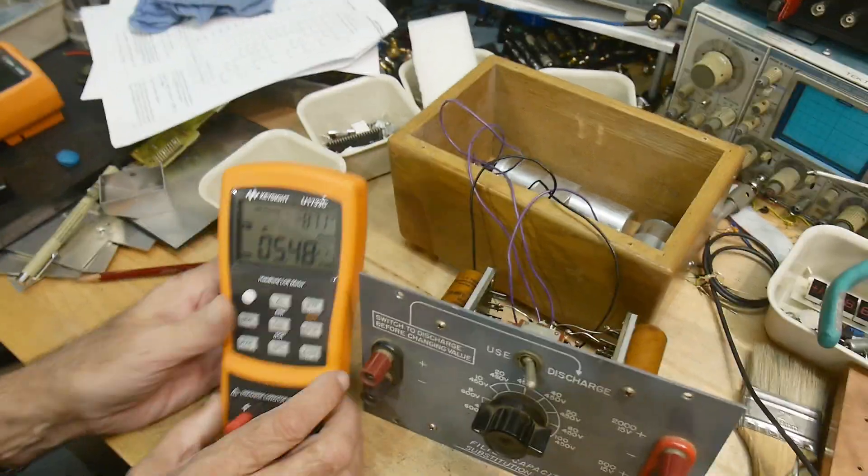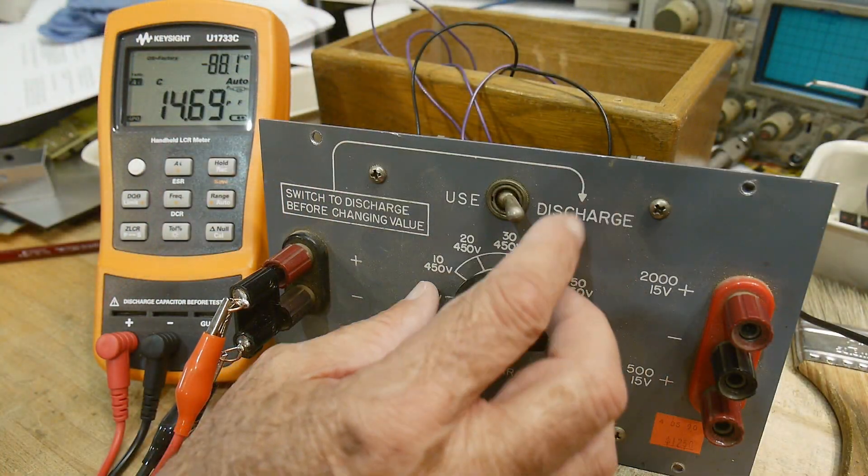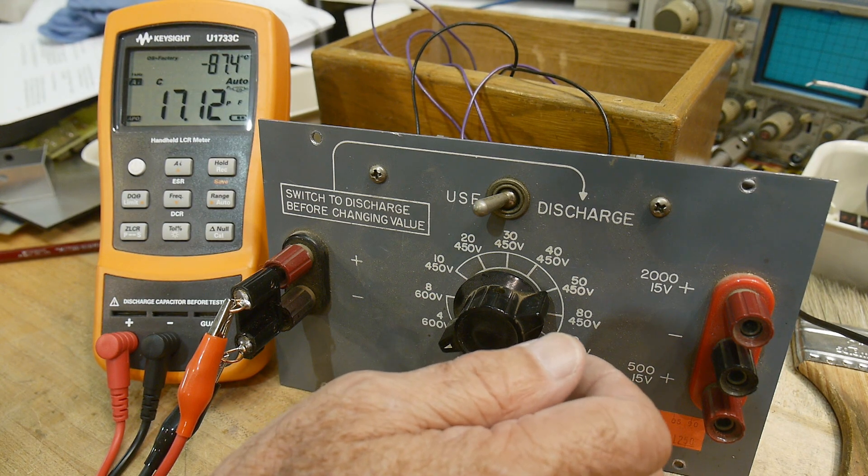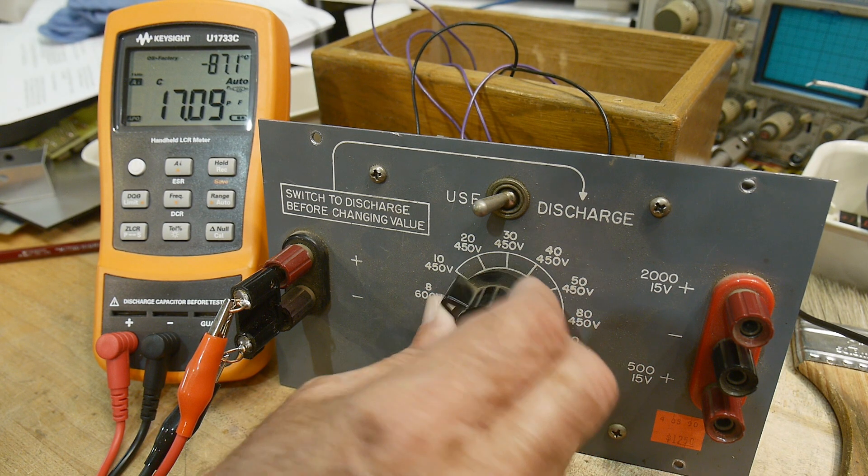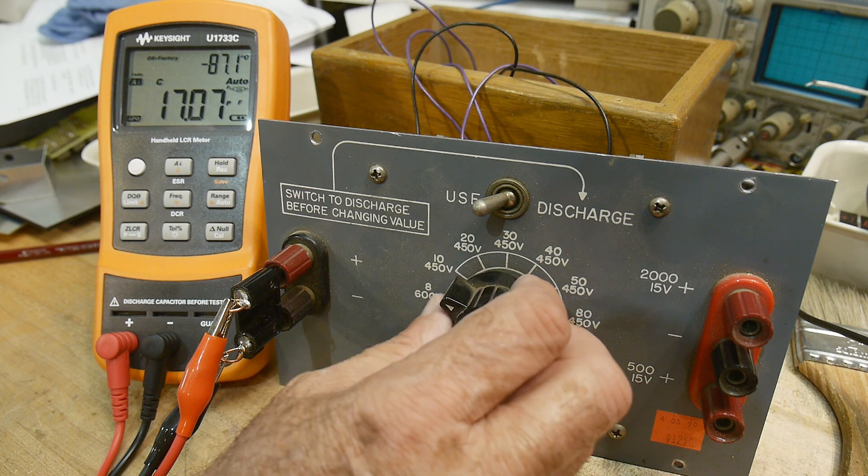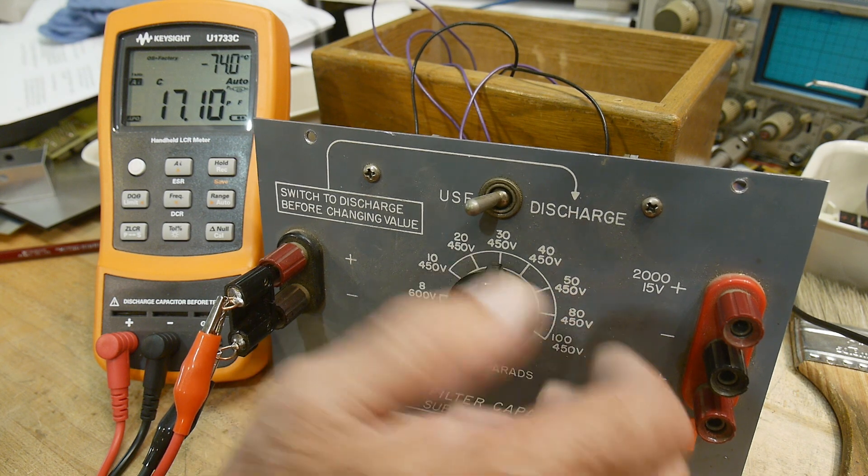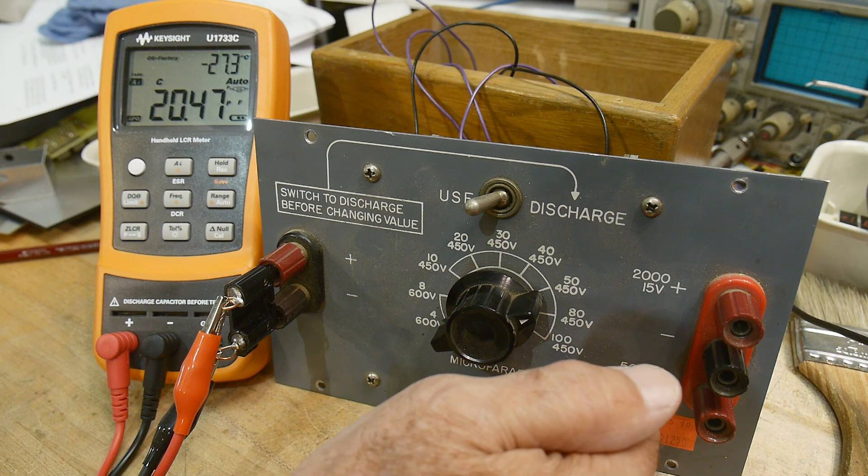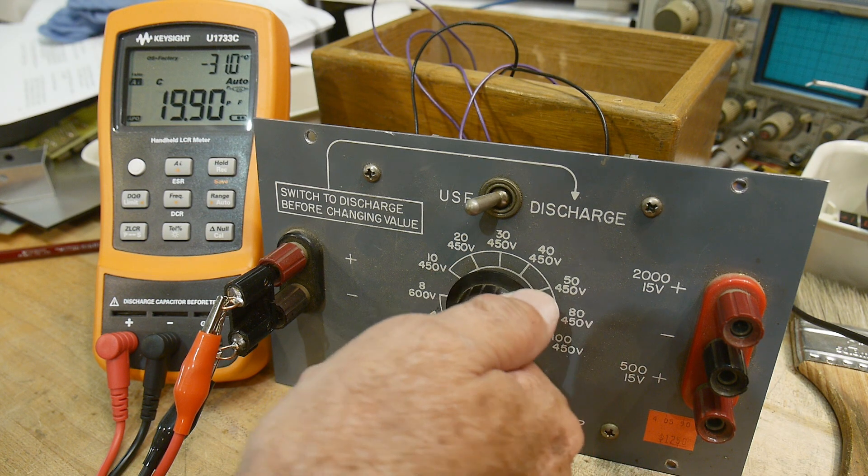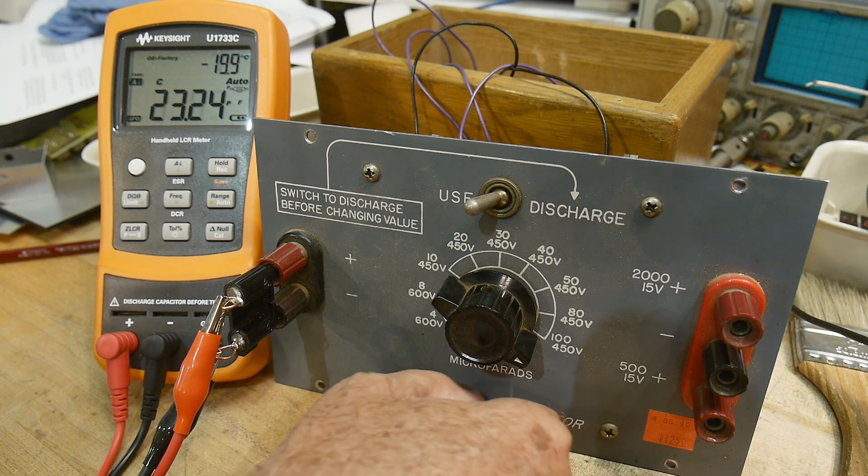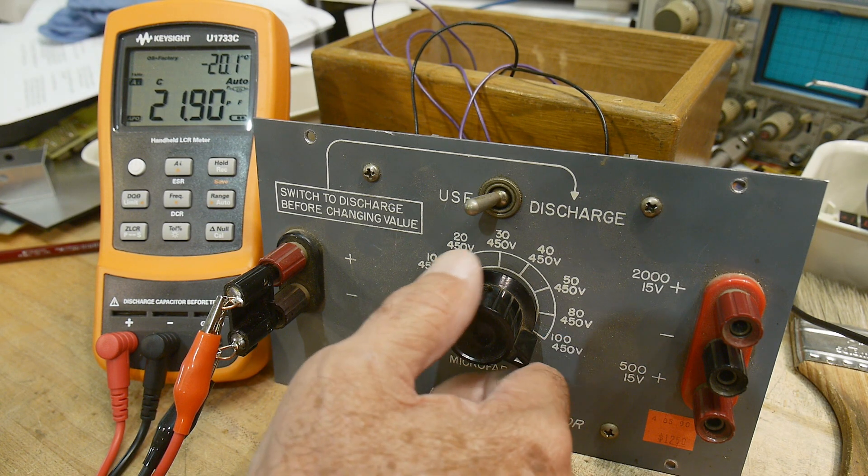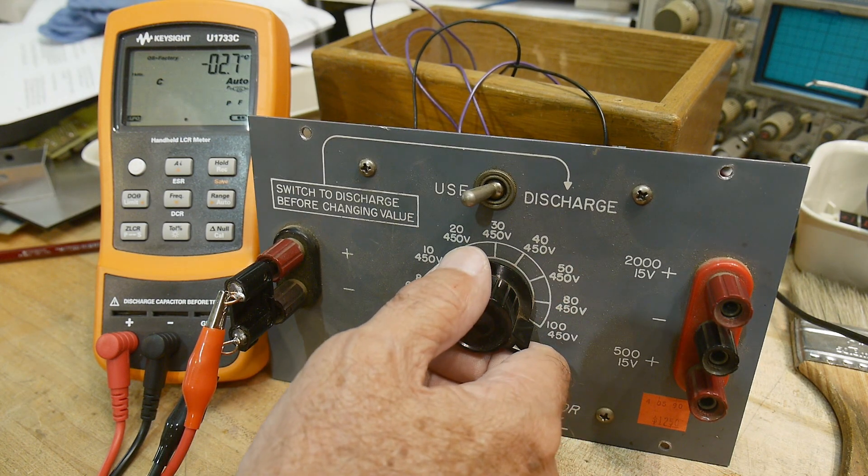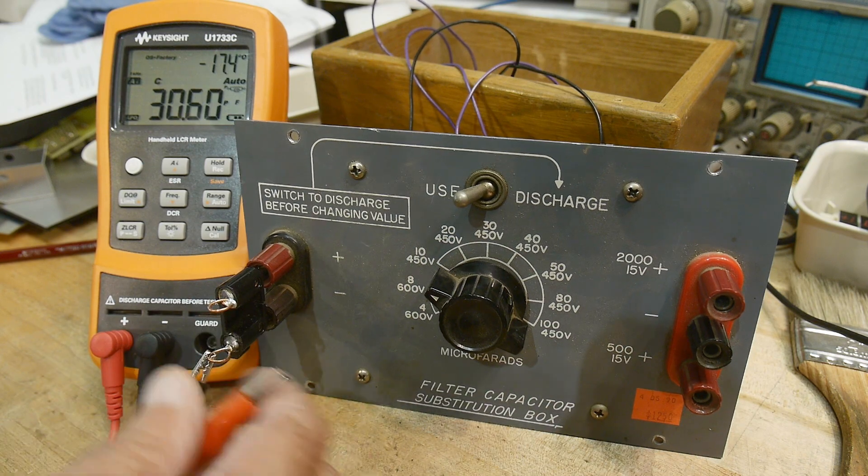Let's try the other side. Use and discharge - we'll start on four: nothing. Eight: nothing. 10: nothing. 20: nothing. 30: nothing. Yeah, I think these guys are dry. 80, 100. Yeah, I don't think we've got nothing left.